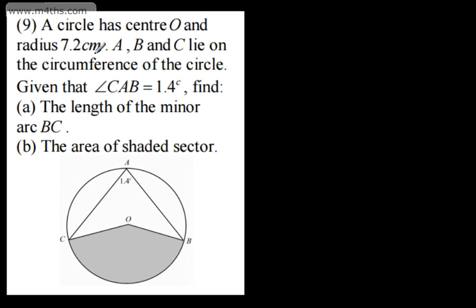In this video, we're going to do some exam-style questions on sectors and segments. This is question number 9. We're told a circle has centre O and radius 7.2 centimetres. A, B and C lie on the circumference of the circle. Given the angle CAB is 1.4 radians, find the length of the minor arc BC and the area of the shaded sector.